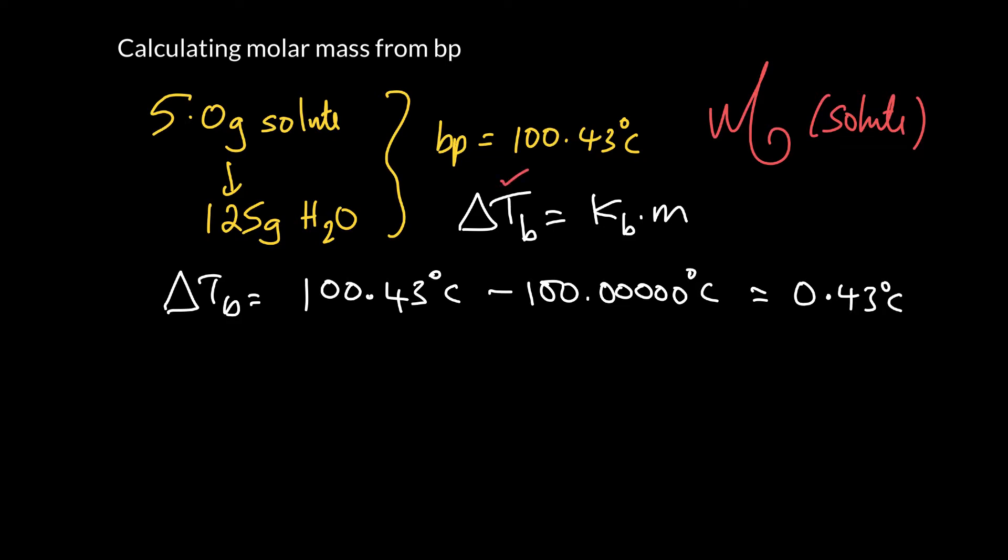So in the equation here we have this Kb. We can actually look up, right? So we can go back to our table and we can see Kb for water is actually something like 0.512 degrees C per molal. So at this point here we can definitely for sure calculate the molal concentration.